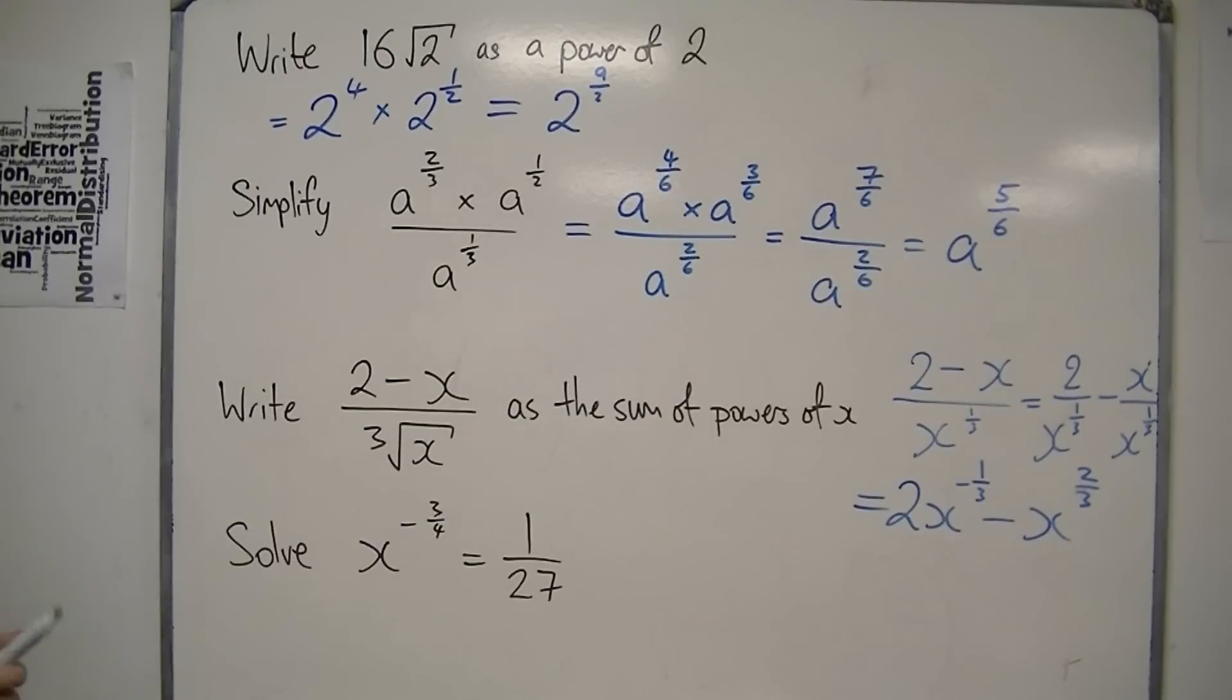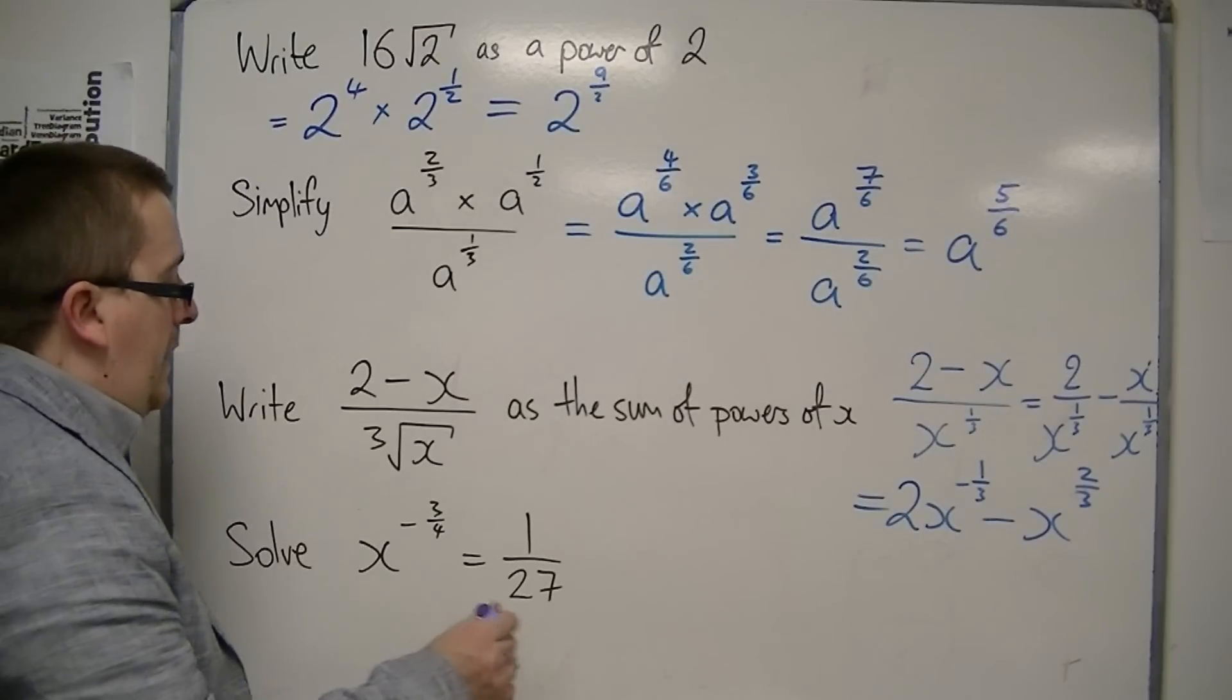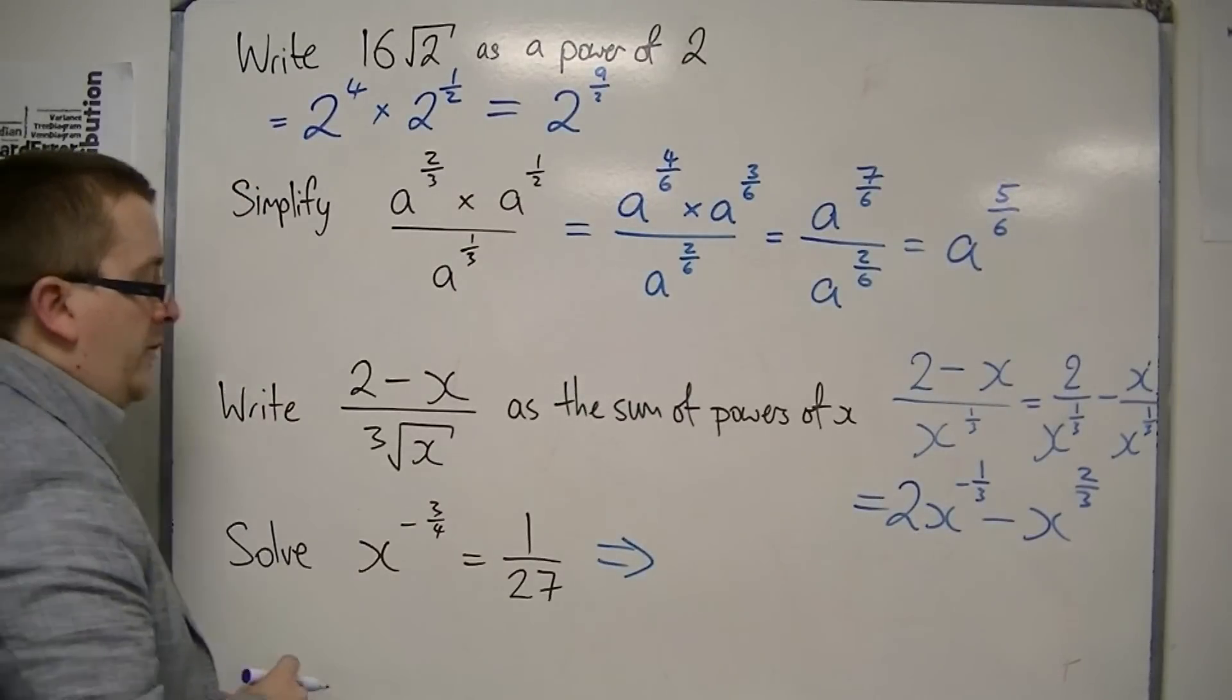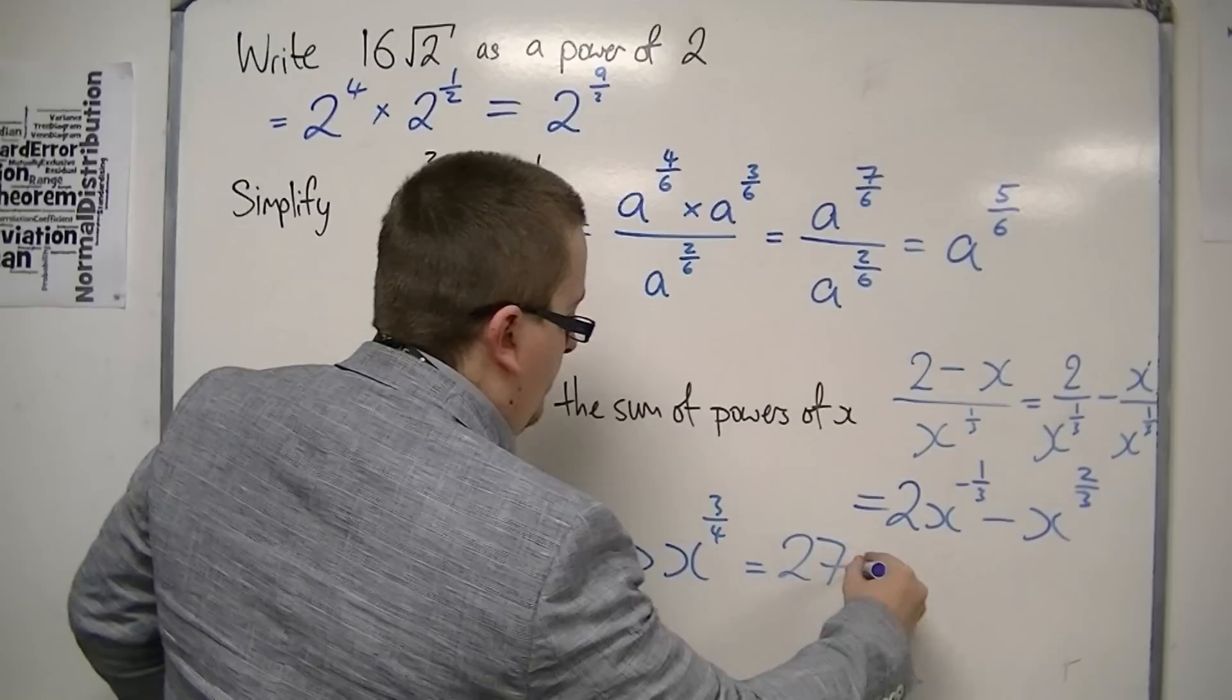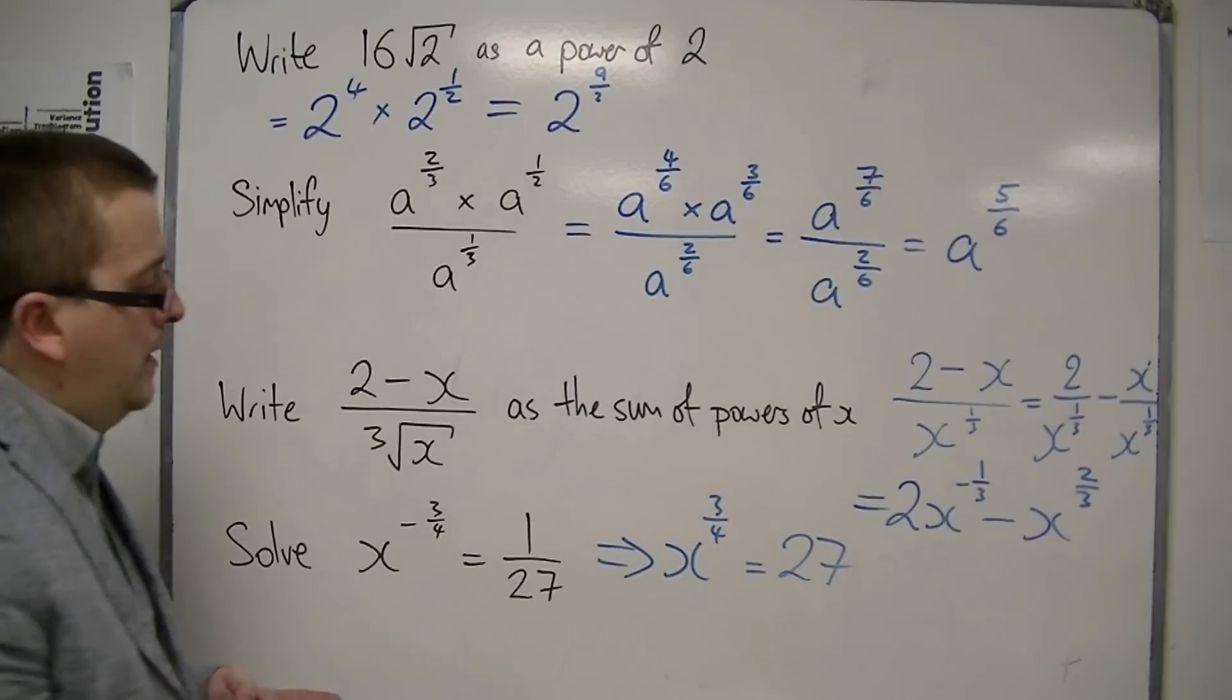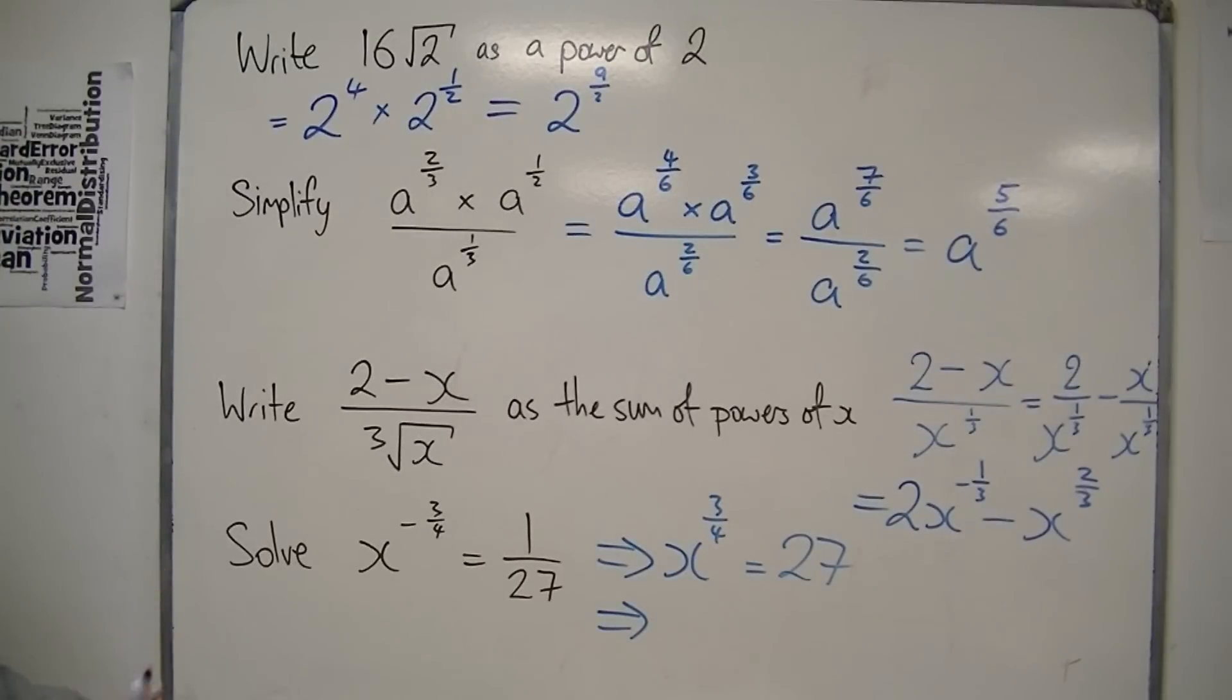The last thing here, this equation, x to the minus 3/4 is 1 over 27. First things first, what you can do is get rid of this negative sign in the power. Now, because that means 1 over, if I now find x to the 3/4, then that must be 27. So x to the 3/4 is 27, just flipping both sides.